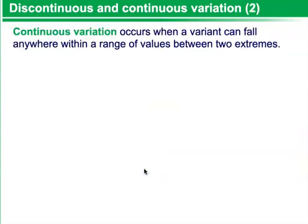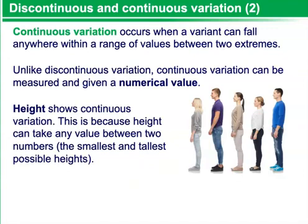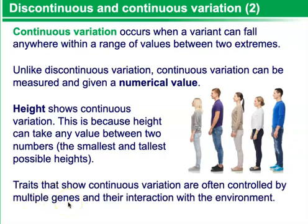Continuous variation occurs when a variant can fall somewhere within a range of values between two extremes. Unlike discontinuous variation, continuous variation can be measured and given a numerical value. Height, for example, shows continuous variation, because height can take any value between two numbers — the smallest and the tallest possible heights. Traits that show continuous variation are often controlled by multiple genes and their interaction with the environment.